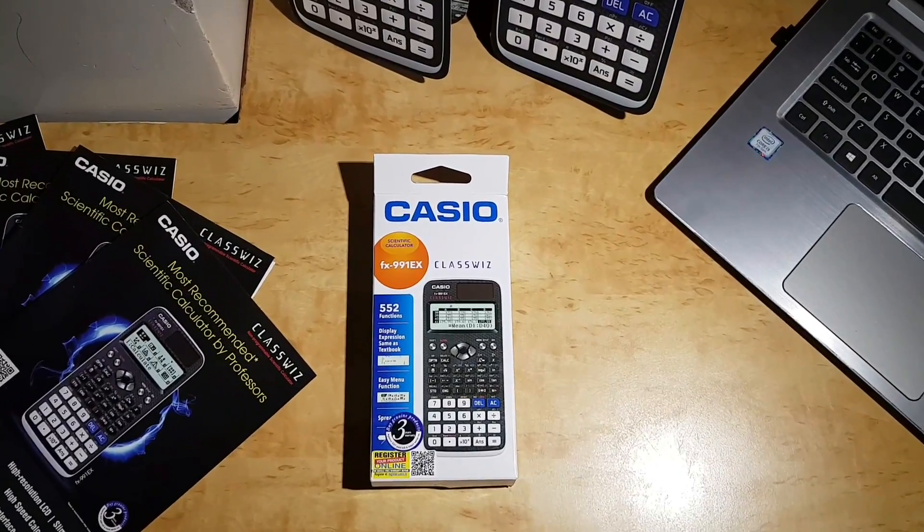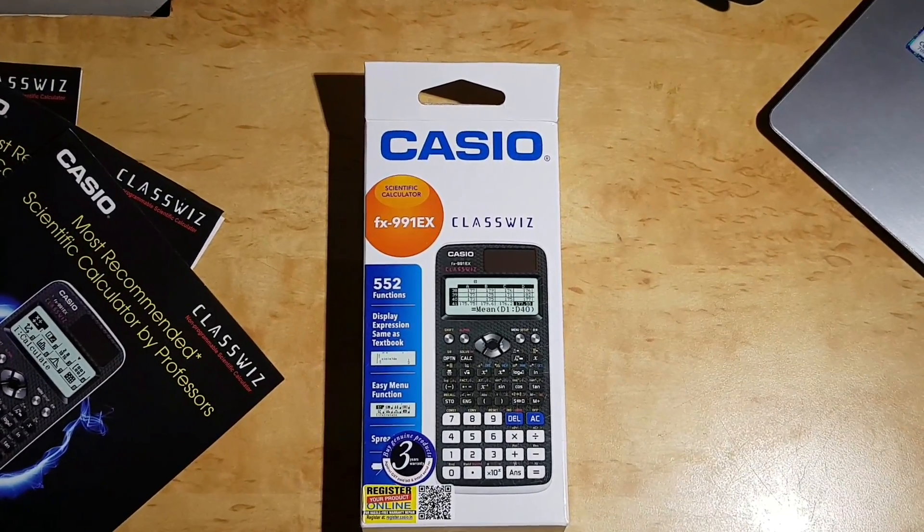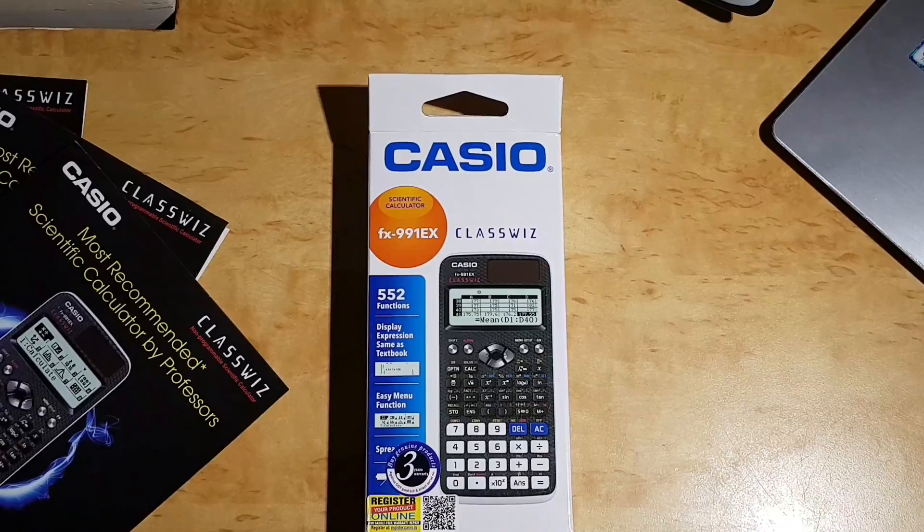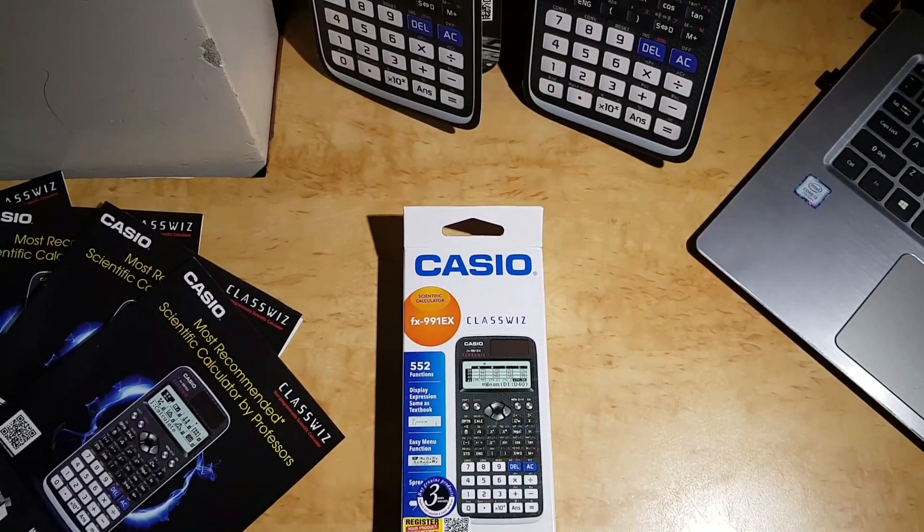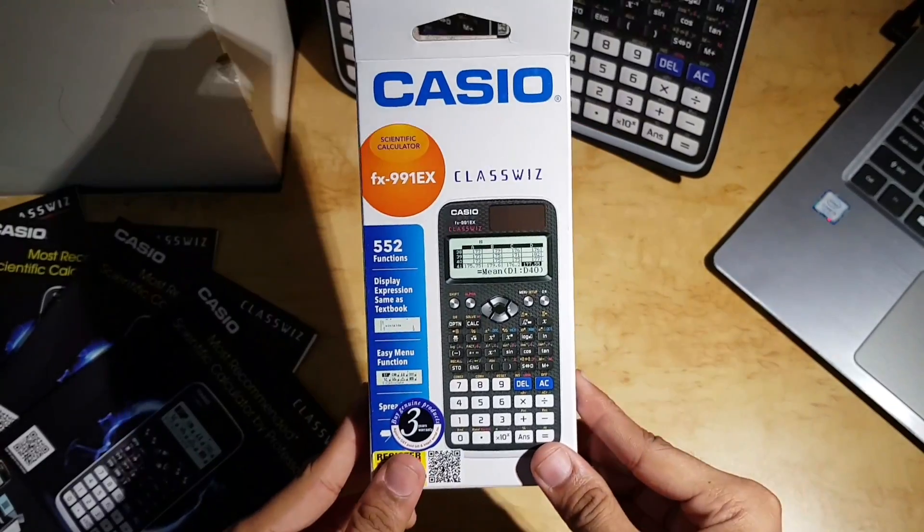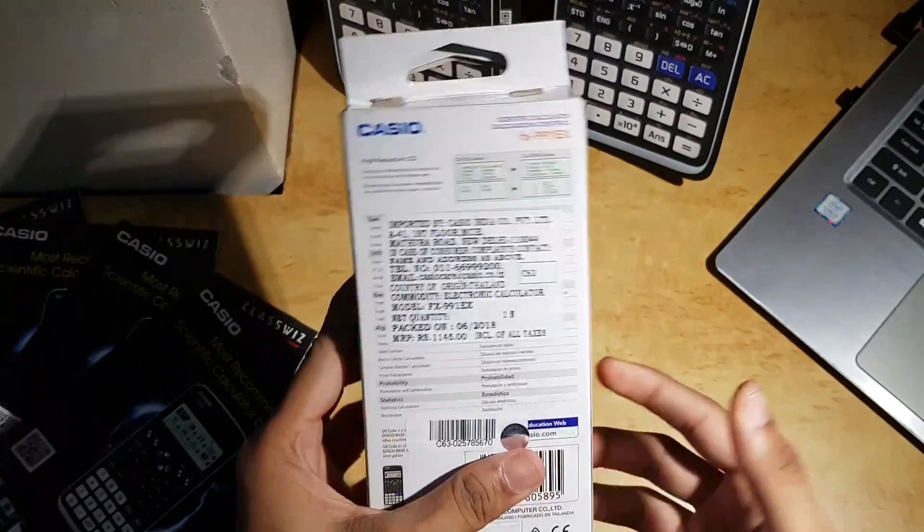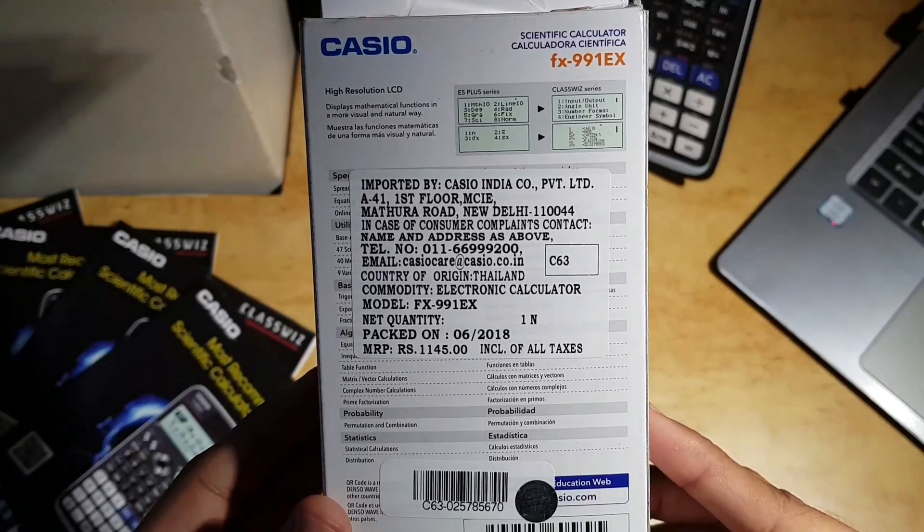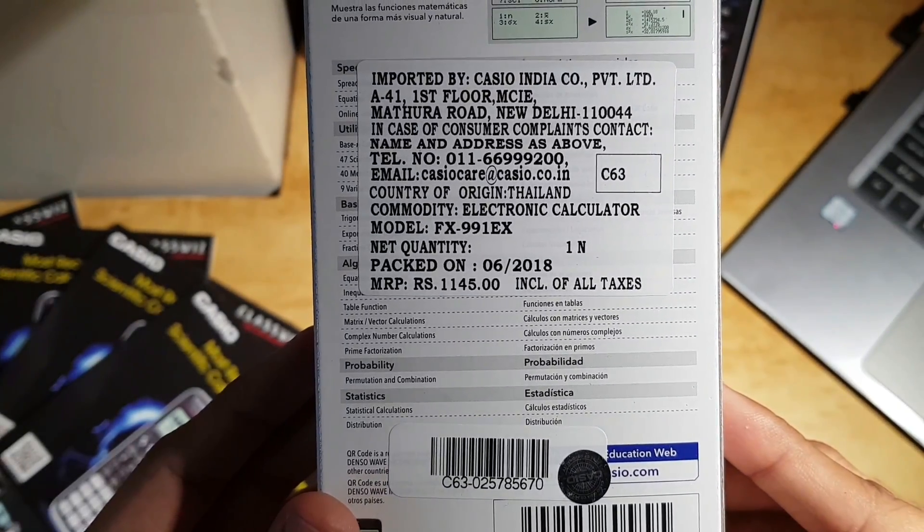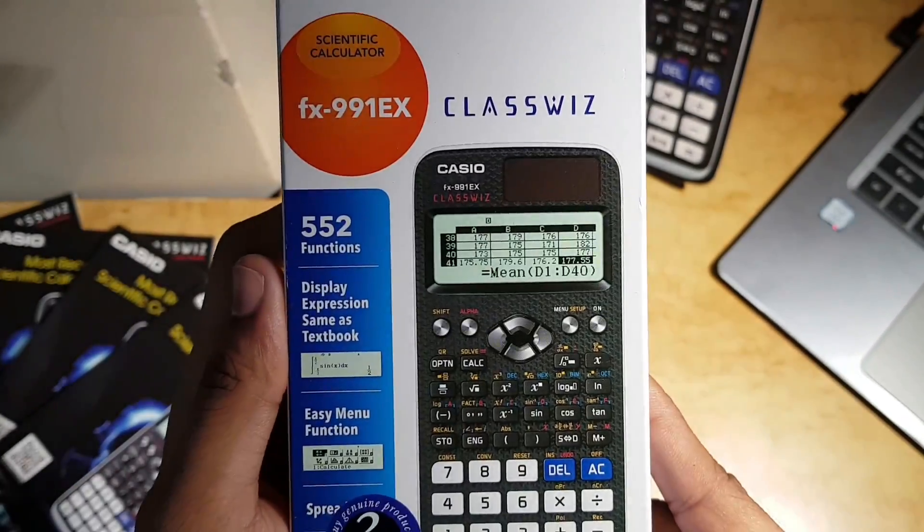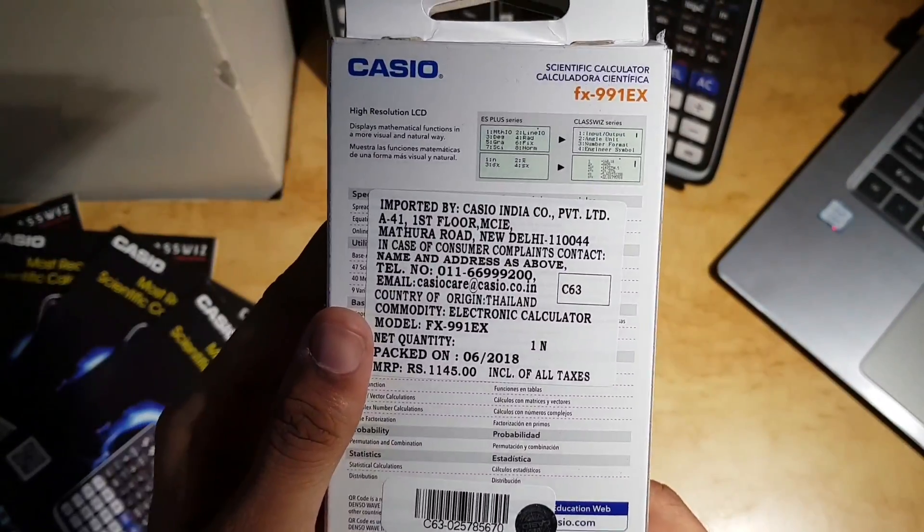This is the Casio ClassWiz Scientific Calculator Model FX-991EX. This is how the box looks. I'm going to start with the unboxing. We have this beautiful box and see, it's priced at 1145 rupees. I'm going to unbox this right now in front of you guys.